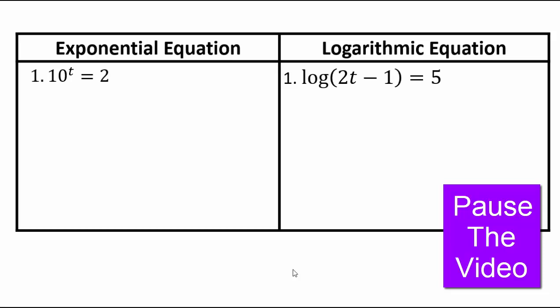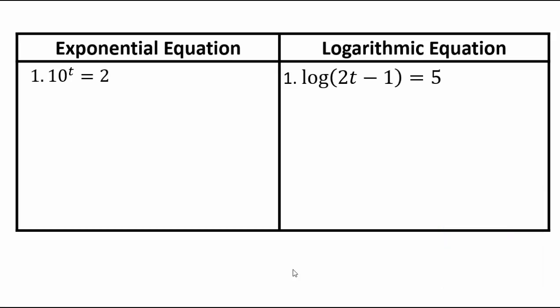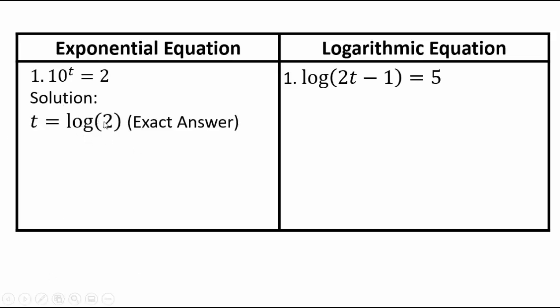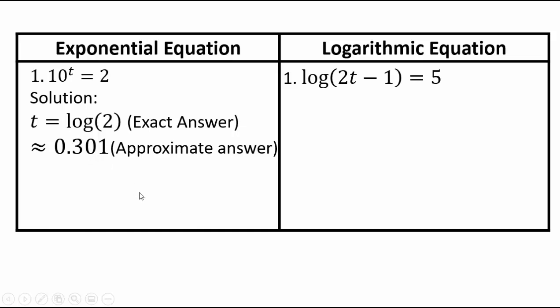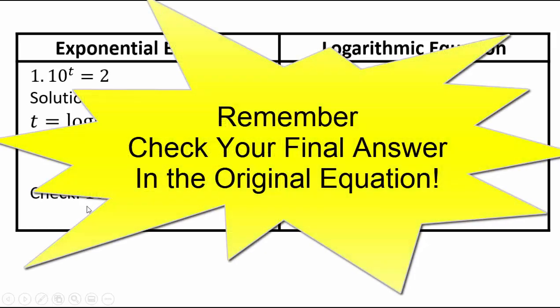Solving an equation is undoing. The only way we know how to undo when the variable is in the exponent is by using a log — in this case log base 10. So solving 10^t = 2 gives t equals log base 10 of 2. This is an exact answer; if you wanted to approximate it, use your calculator, which gives approximately 0.301. To check: 10 to the power log base 10 of 2 gives 2. It's always important to check your answer.